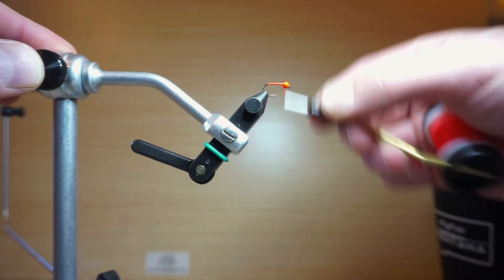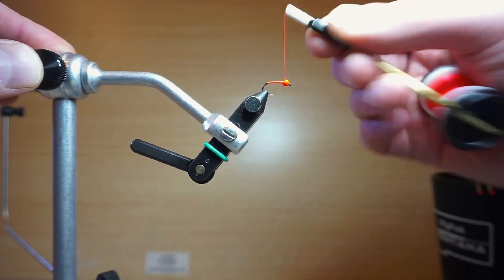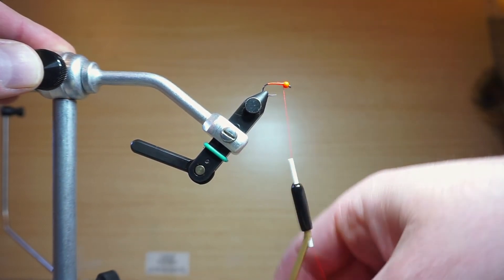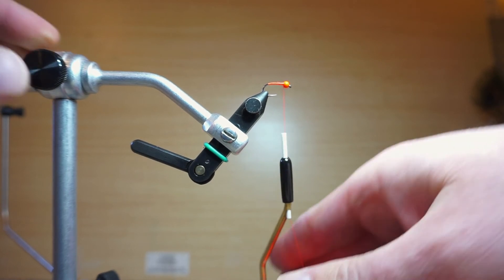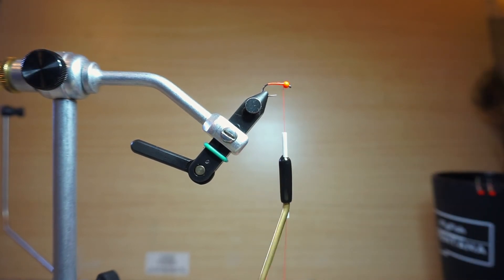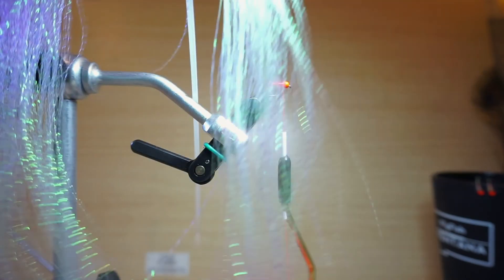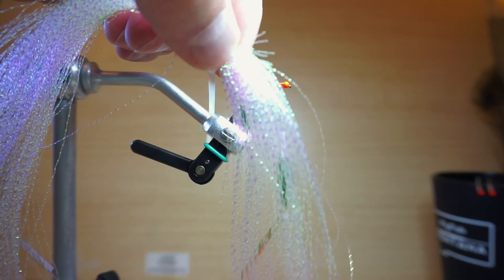So for this extra flashy Rainbow Warrior I'm using a fluorescent orange thread in 7D denier and a bead to match. Hook size and bead size and all that is up to you and what you're trying to achieve. This one is a size 14 nymph hook.